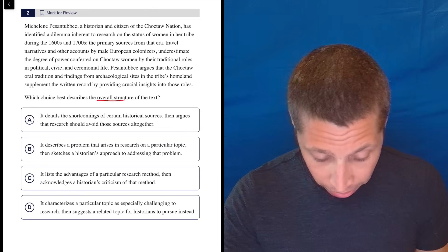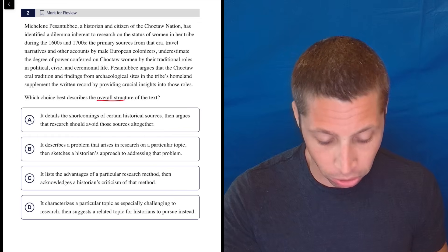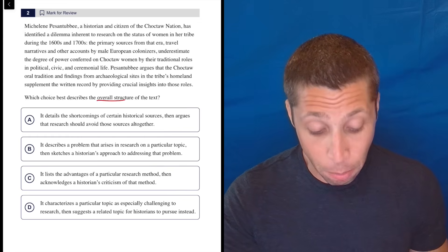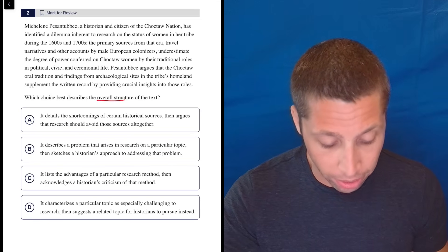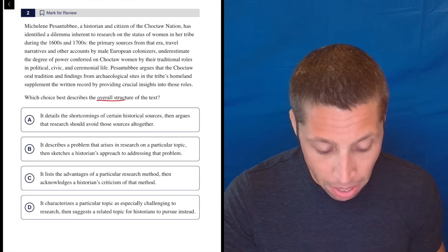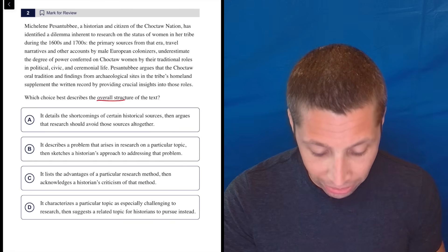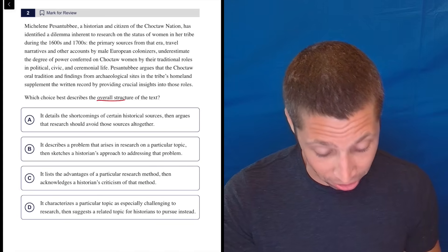This person, a historian and citizen of the Choctaw nation, has identified a dilemma inherent to research on the status of women in her tribe during the 1600s and 1700s. The primary sources from that era, travel narratives and other accounts by male European colonizers, underestimate the degree of power conferred on Choctaw women by their traditional roles in political, civic, and ceremonial life. Holy cow, that's quite the sentence. It's like half the passage, at least more than that.